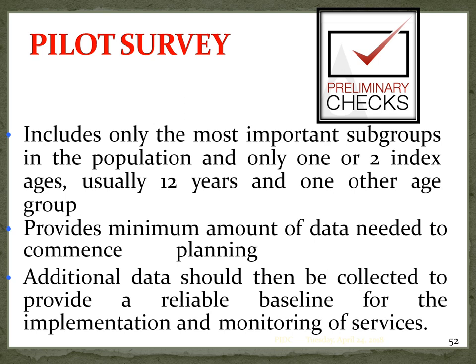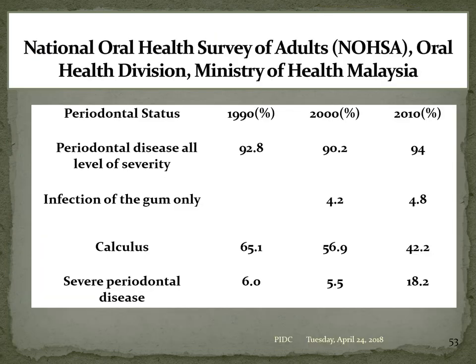The pilot survey checks whether your protocol is working or needs modification. Once confirmed, you proceed to the national pathfinder survey. National oral survey data from Malaysia: periodontal disease at all levels of severity was 92.8% in 1990, 90.2% in 2000, and 94% in 2010. This allows us to plot a trend — the rate decreased in 2000 but increased again in 2010, and we must investigate why that fluctuation occurred.